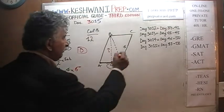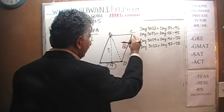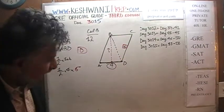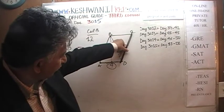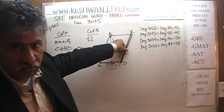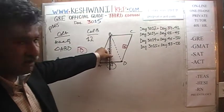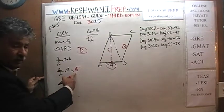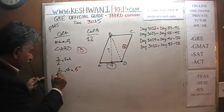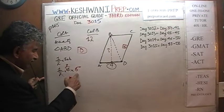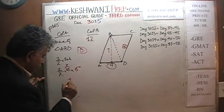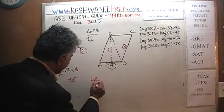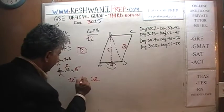Why? Because if the slanted side is 6, a line coming straight up — the perpendicular height — must be less than 6. Therefore, one-half times 4 times something less than 6 gives something less than 12. We are comparing something less than 12 versus 12, so the answer is B.